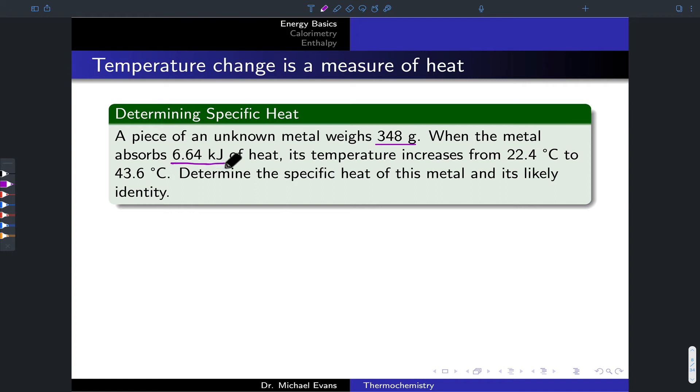Maybe we're using some kind of system that we've calibrated where we know how much heat it delivers per some amount of time, and we're hitting it over a known amount of time. That delivers 6.64 kilojoules of heat to the metal, and, for example, using a thermometer, we know that the temperature increases from 22.4 degrees Celsius to 43.6 degrees Celsius. So our goal here now is to determine the specific heat of the metal and its likely identity based on a table of specific heats.